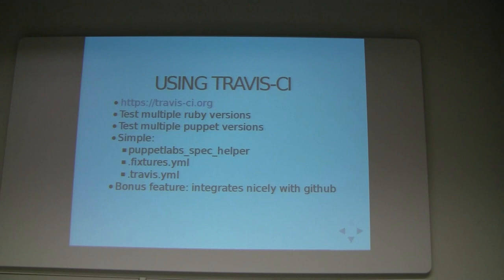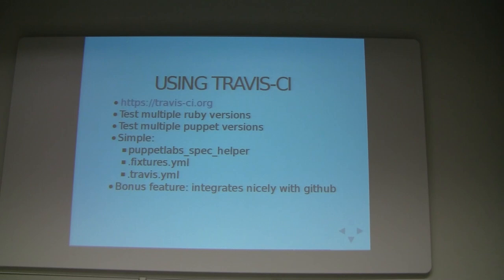So how do we use Travis? It's fairly simple. What are the advantages of using Travis? You can easily test multiple Ruby versions. Maybe if you write custom functions, you want to test Ruby 1.8 and 1.9 but you don't feel like setting up all those boxes — just use Travis. You can also test multiple Puppet versions — Puppet 2.7 and Puppet 3.0. And how is it so easy? Because of the PuppetLabs Spec Helper, which introduced features you can use when writing tests.